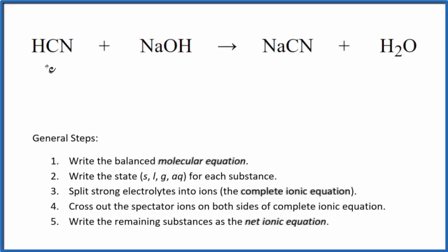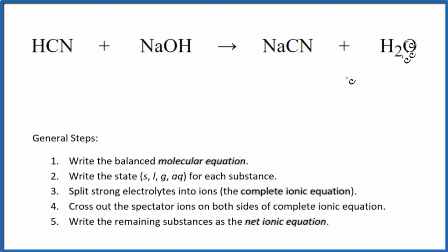In this video, we'll write the balanced net ionic equation for HCN plus NaOH — hydrogen cyanide plus sodium hydroxide. The first thing we need to do with net ionic equations is balance the molecular equation. Our molecular equation here is already balanced, so that's good. Then we need to write the state for each substance.